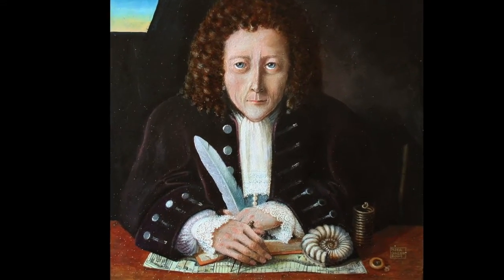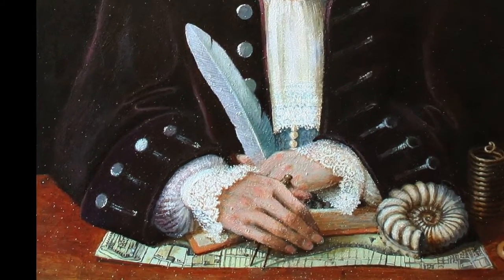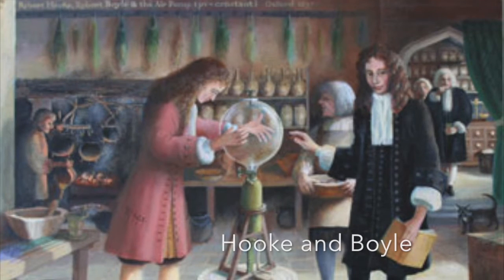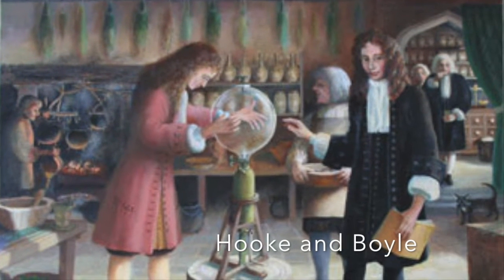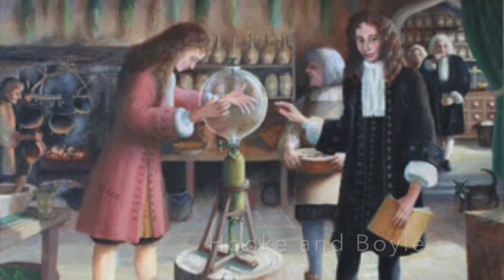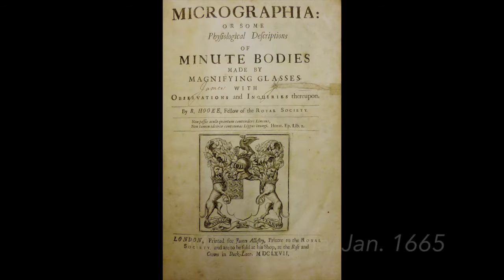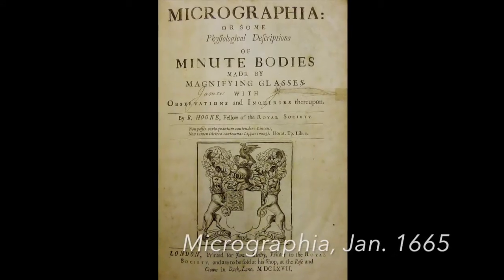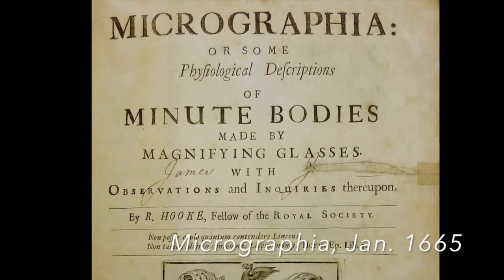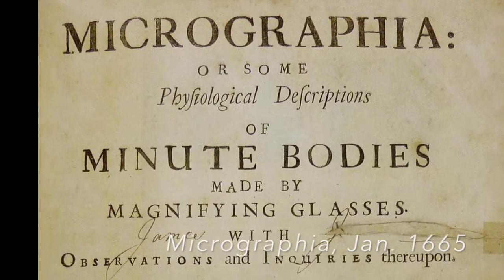Hooke left home at the age of 13 to study classical languages and math. Over time, he started leaning more towards science, and was an assistant to the chemistry legend Robert Boyle — yes, two Roberts. Ten years after taking this position, he published the first-ever scientific bestseller, Micrographia.